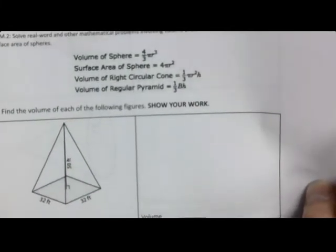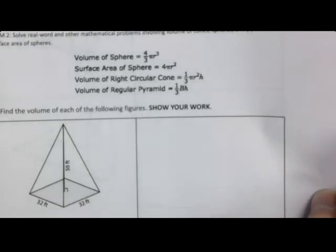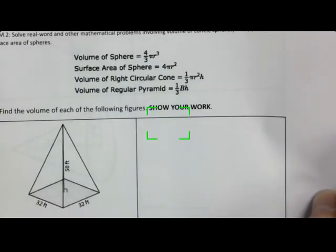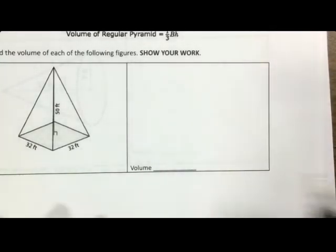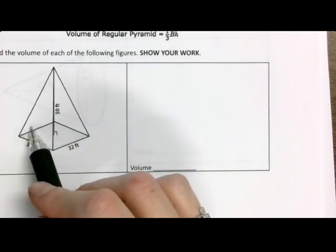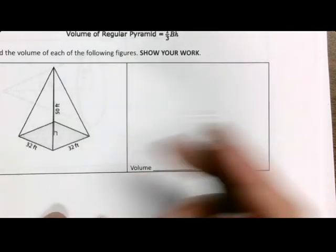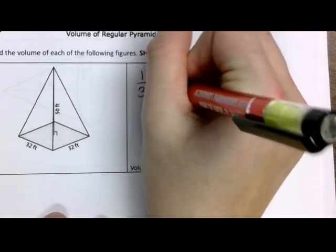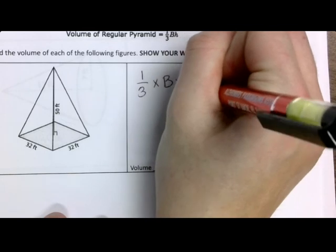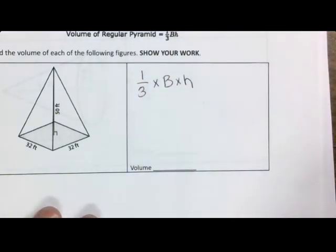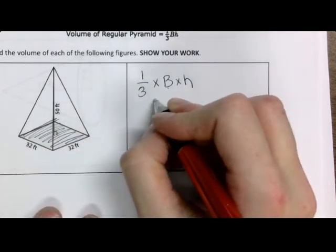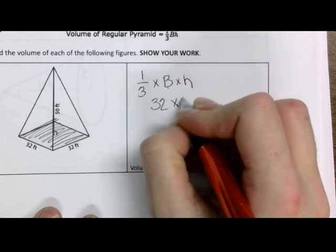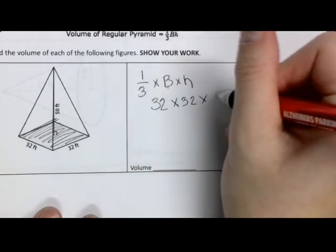Here are the formulas for all of the shapes that we've done so far. I'm going to give you those, keep those handy. Now we are going to do volume of a square pyramid. Right here I have a square pyramid or a regular pyramid. This is one-third times the base times the height. What's the base? The base is the square. So 32 times 32 times the height of 50.